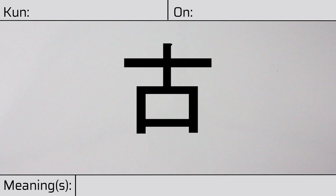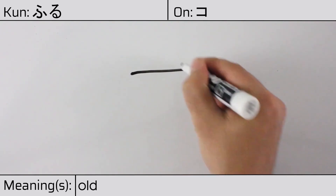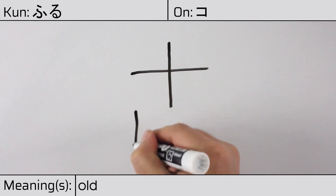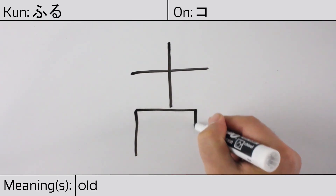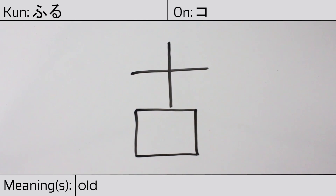Welcome to this lesson on Japanese kanji. Today, we'll be discussing this character. This kanji has a kunyomi or Japanese reading of furu, and it has an onyomi or Chinese reading of ko. This character has the meaning old. Here is the stroke order.